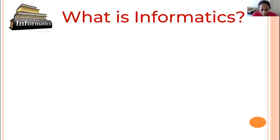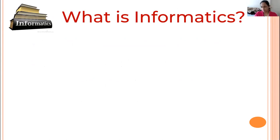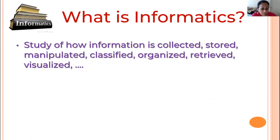Before we define what bioinformatics is, I want to talk about what informatics is. If you want to take a stab, start typing in the chat. Betsy said gathering and organizing information — fantastic, that's precisely it. The study of how information is collected, stored, manipulated, classified, organized, retrieved, and visualized. How does informatics differ from information technology, information science, and computer science? They all pretty much belong to the same family — it's all about data and how you collect it. You go shopping and everything is collecting data. We're pretty much breathing in and breathing out data today.